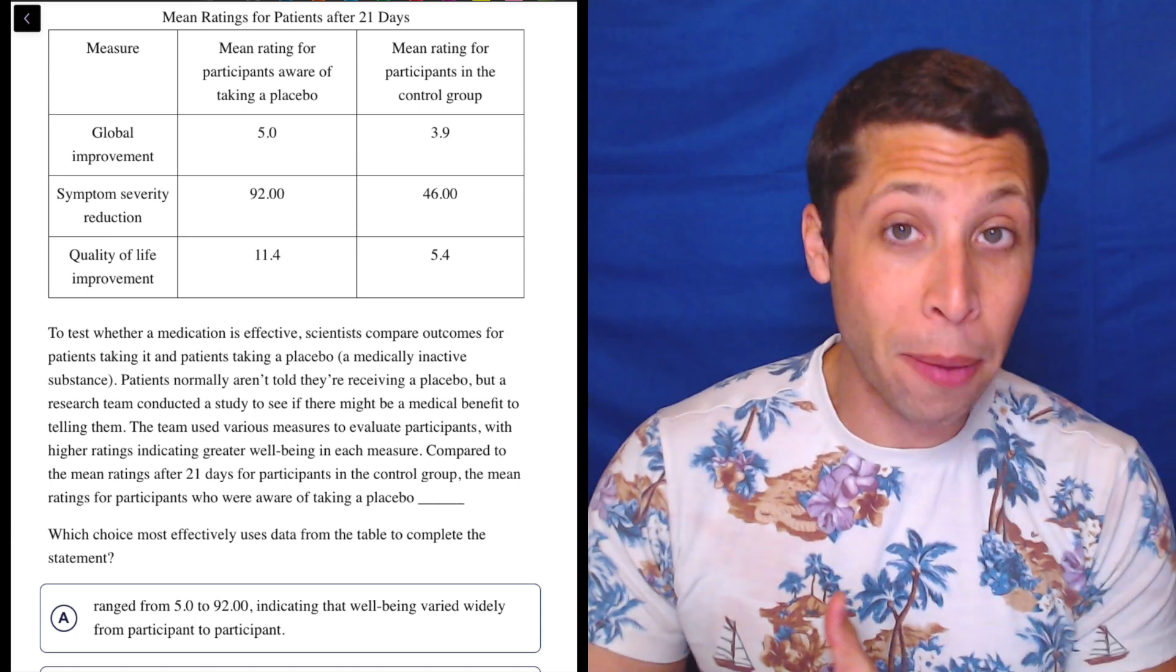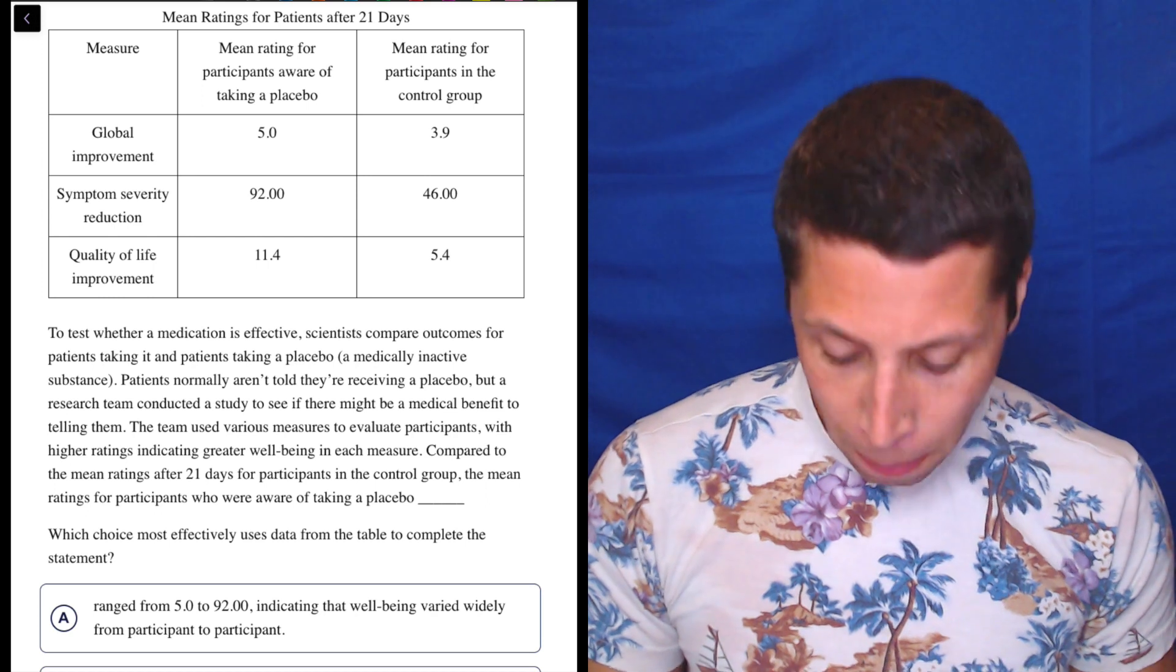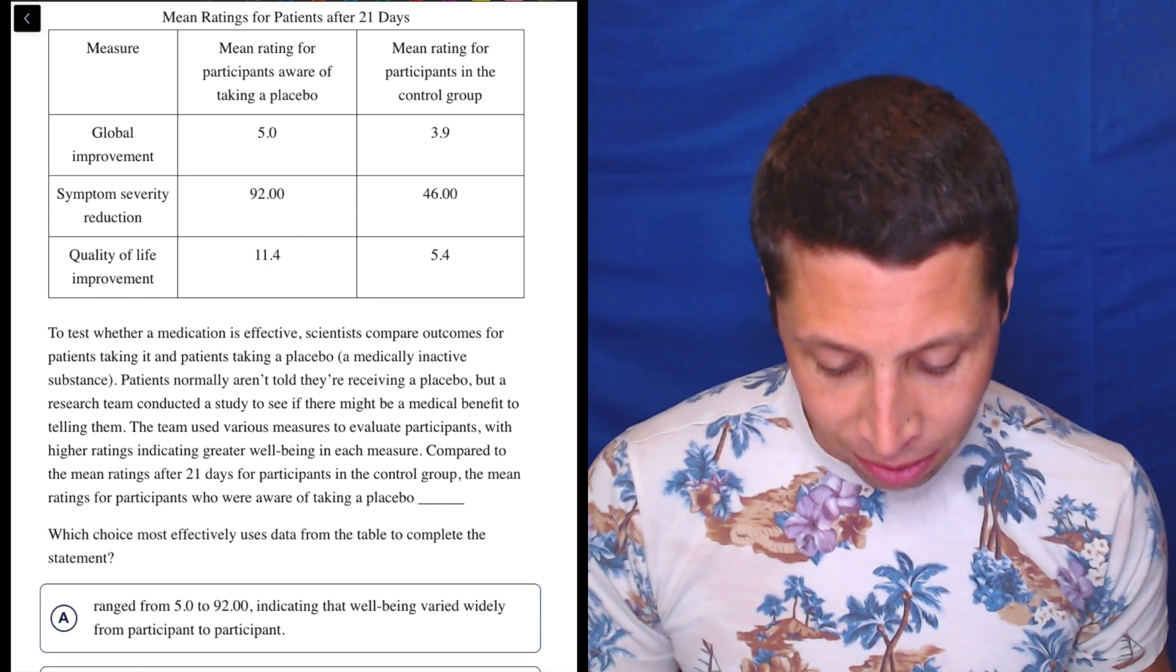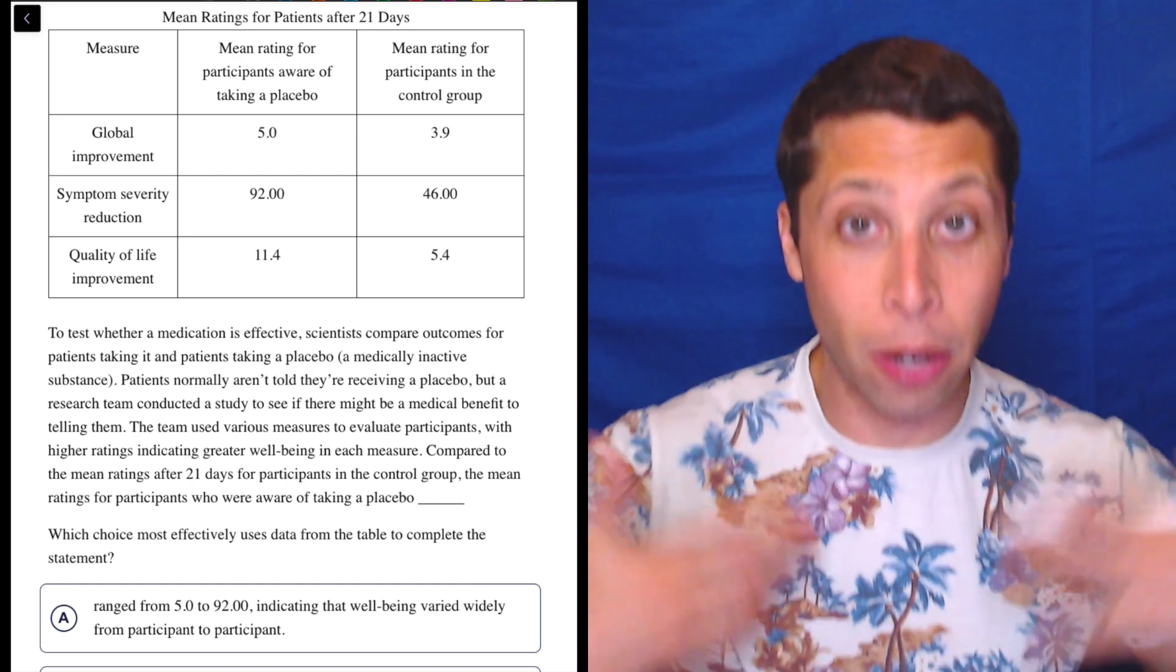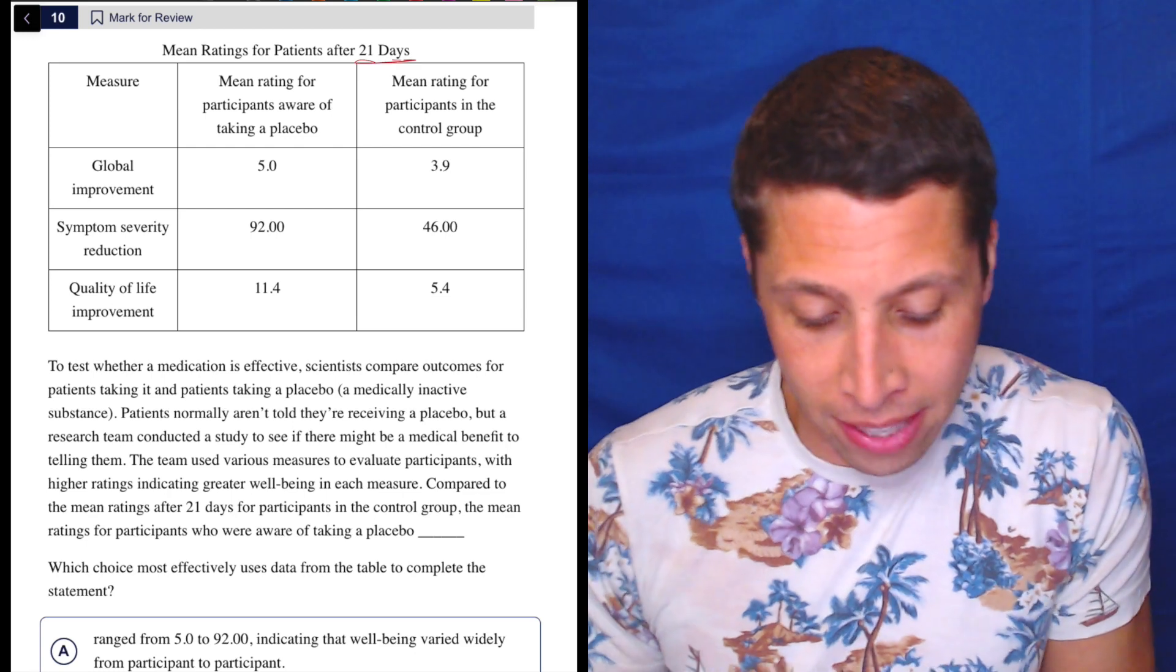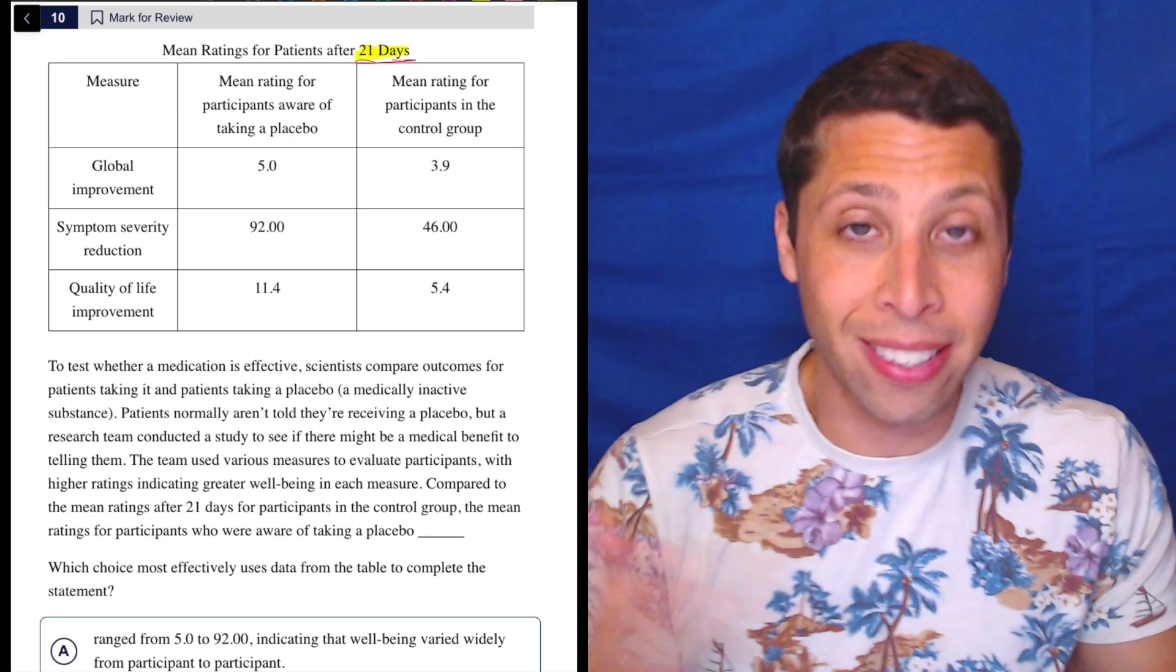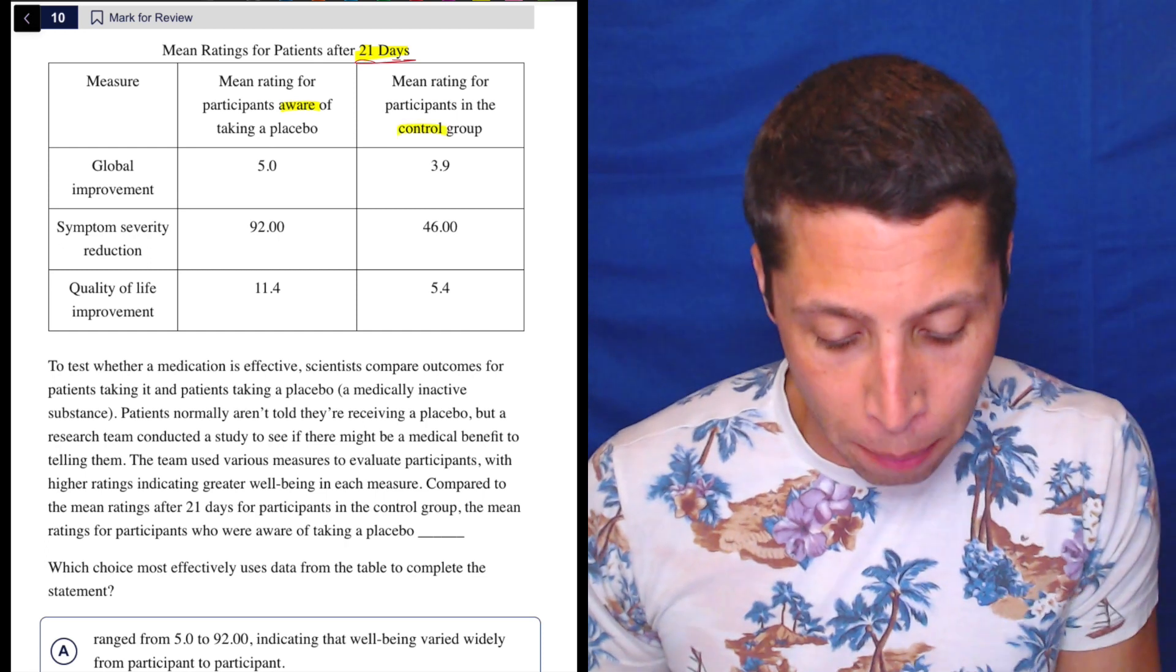So far, this is just describing what may be as obvious by the chart and your knowledge of what a placebo is. Compared to the mean ratings after 21 days for participants in the control group, the mean ratings for participants who are aware of taking a placebo. Okay, well, this is where they're just telling me what to look at. The 21 days piece is in the title, so that's not really relevant. And then we have people who are aware of taking a placebo and people in the control group.